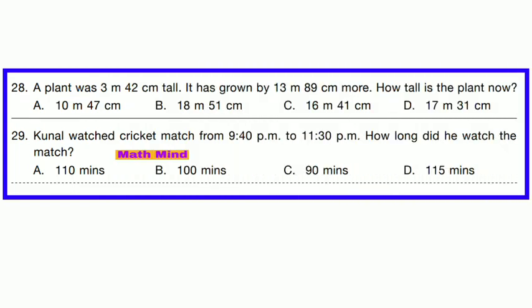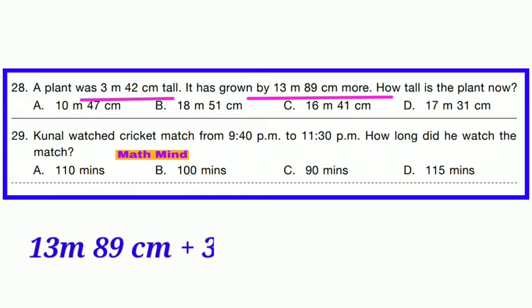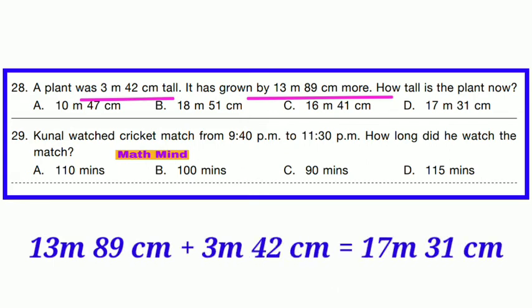Question No. 28: A plant was 3 meters 42 cm tall. It has grown by 13 meters 89 cm more. How tall is the plant now? Adding 13 m 89 cm to 3 m 42 cm, we get 17 meters 31 cm. Option D is correct — the plant is now 17 meters 31 cm tall.